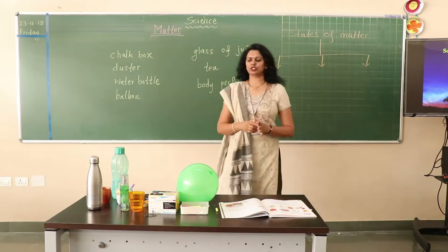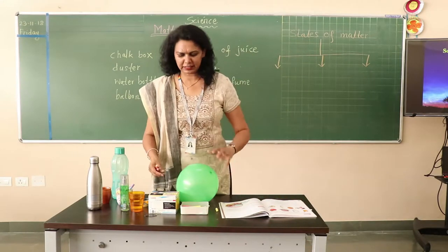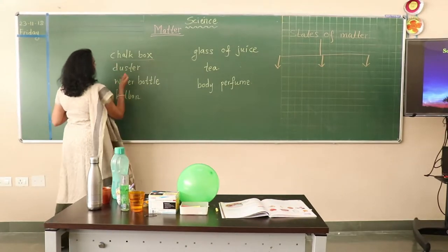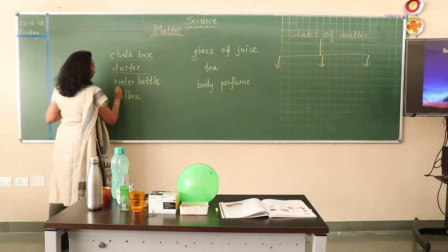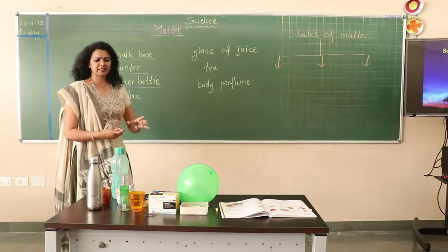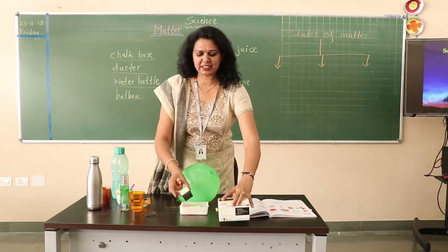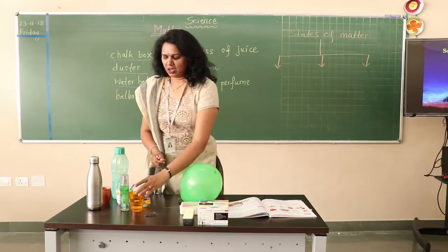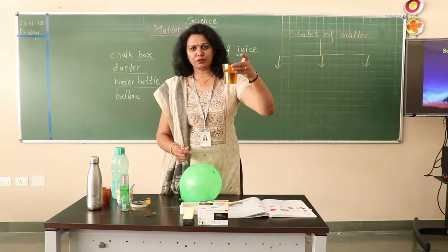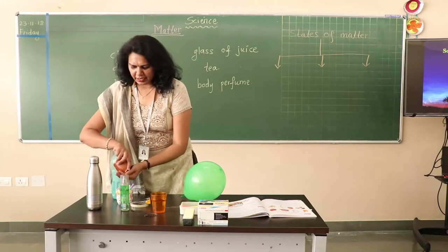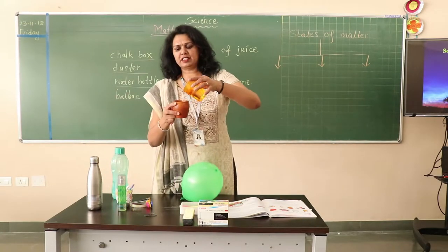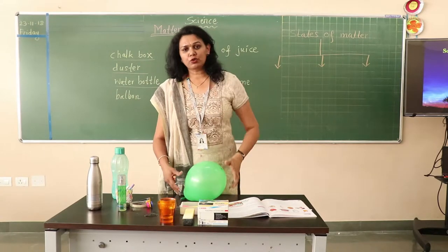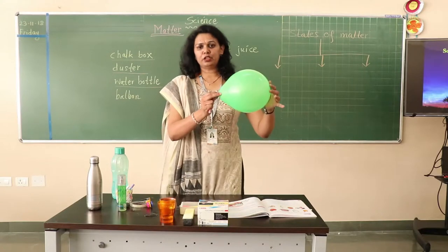We will be going through one by one each. The things which you see as chop box, duster, water bottle — all these things have specific shape and they have a specific weight. Here a glass of juice which I will pour in another cup. So you can see I can pour the juice. So this is also a state of matter, and a balloon.